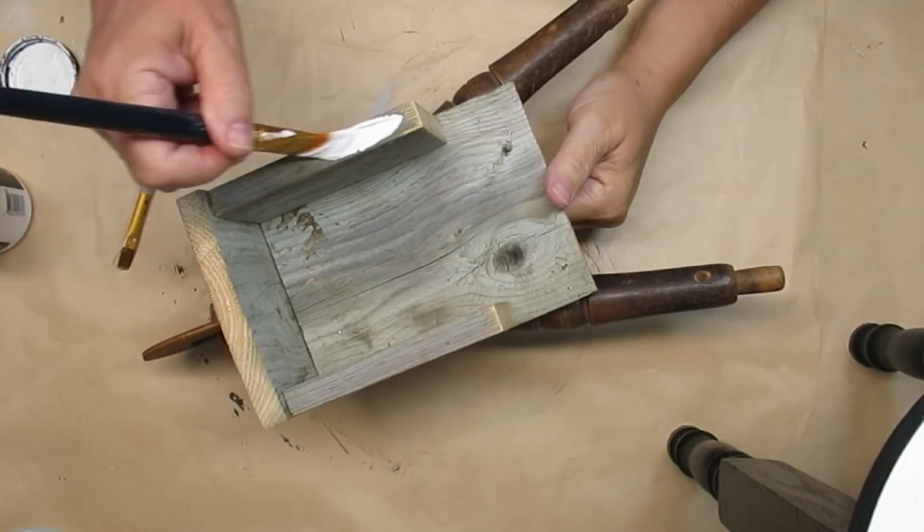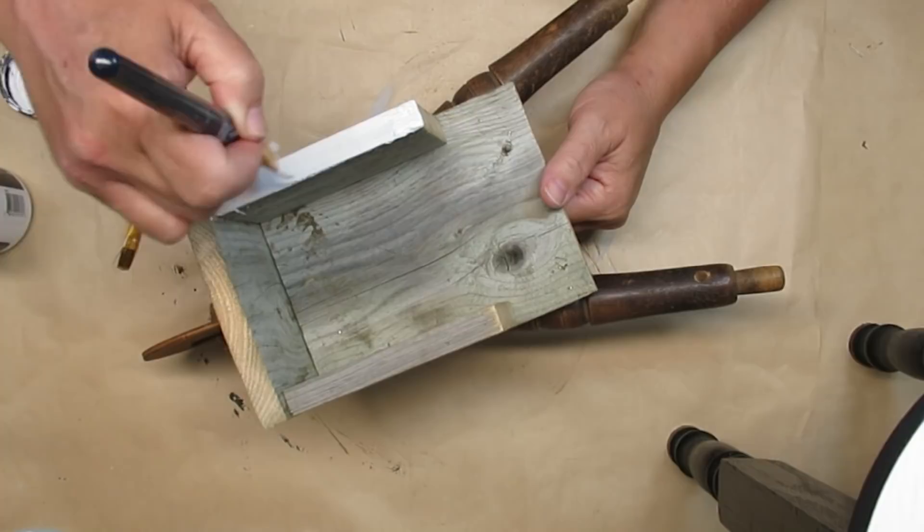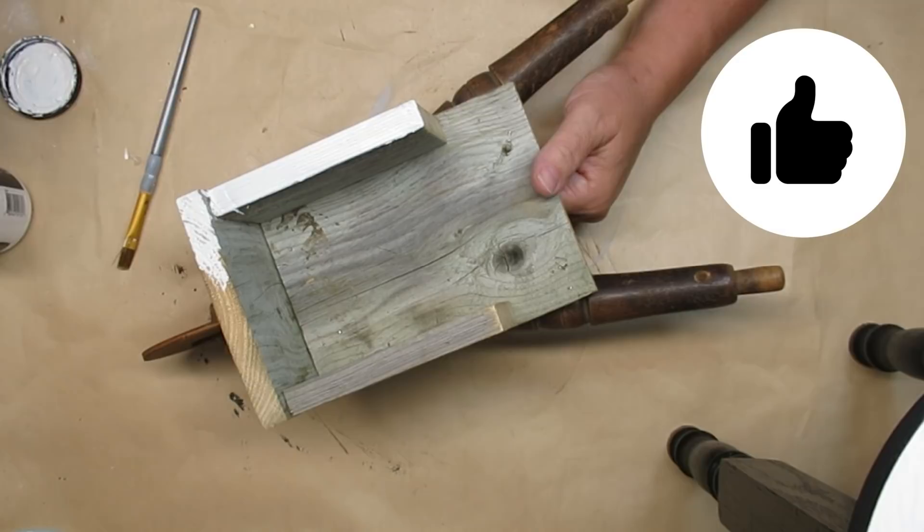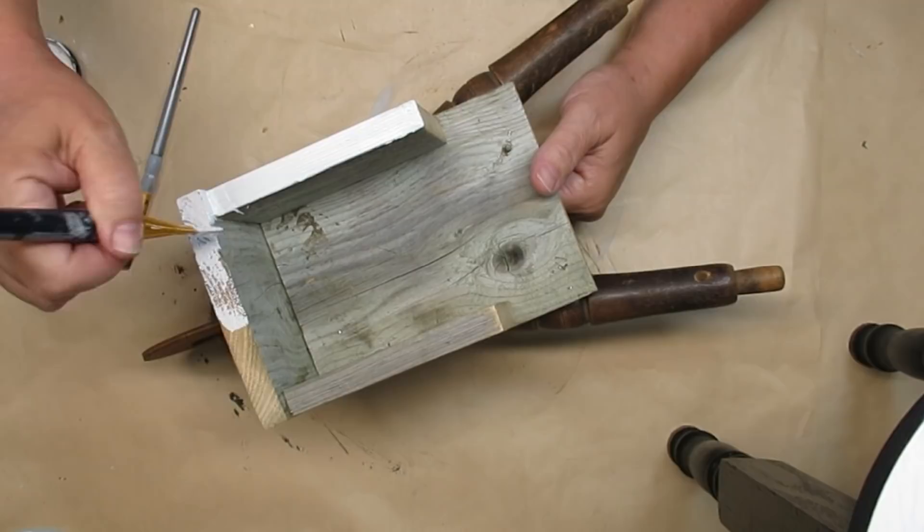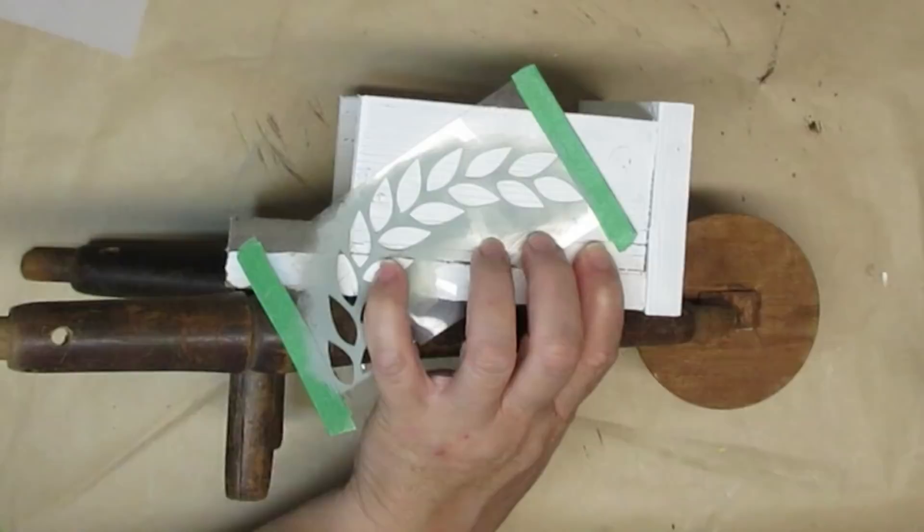At first I thought I was going to leave the wheelbarrow rustic, but then I decided I think I need to paint it white. I'm glad I did because I think it complements the dark brown of the handles and the wheel much better. Just a coat of white chalk paint—you could use latex paint or acrylic paint. This type of wood is a fence board and it just soaks everything in really well.